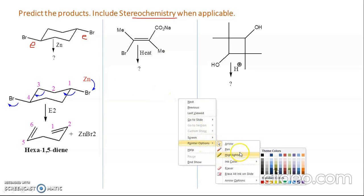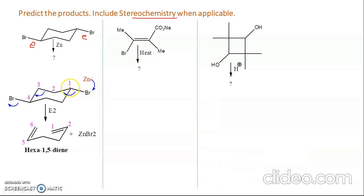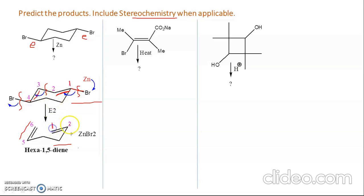Zinc acts as a reducing agent and first attacks the bromine. This is a fragmentation-type reaction: the C–Br bond at position 1 is broken, a new C=C bond forms between C1 and C2, the C2–C3 bond is cleaved, a new double bond forms at C3–C4, and the C–Br bond at C4 is also broken. The product is hexa-1,5-diene and the byproduct is ZnBr₂.